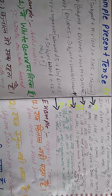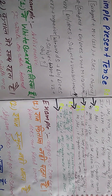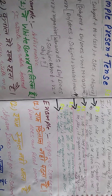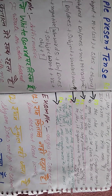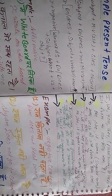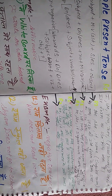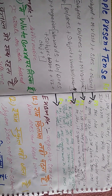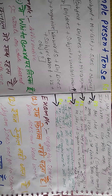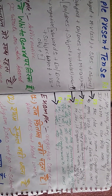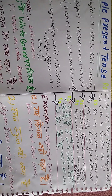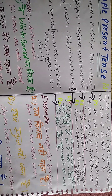Negative के formula देखेंगे. Rule number 1: I, We, You, They और plural nouns के साथ 'do' का use करते हैं. Rule number 2: He, She, It और singular nouns के साथ 'does' का use करते हैं.